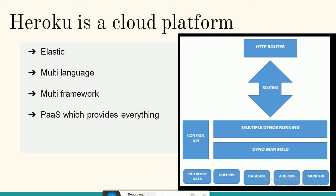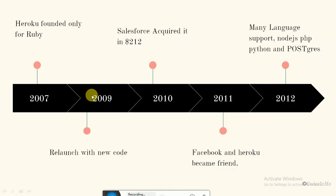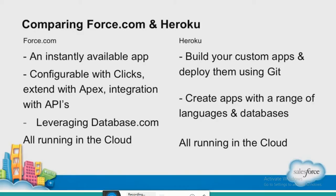Here is the history of Heroku: it was founded for Ruby in 2007. In 2009 a new COO came in and in 2010 the code was rewritten from scratch. In 2010, Salesforce acquired Heroku for 212 million dollars. In 2011, Salesforce and Heroku became integrated — Facebook apps basically worked on Heroku. By 2012, Heroku also supported Node.js, PHP, Python, and Postgres.